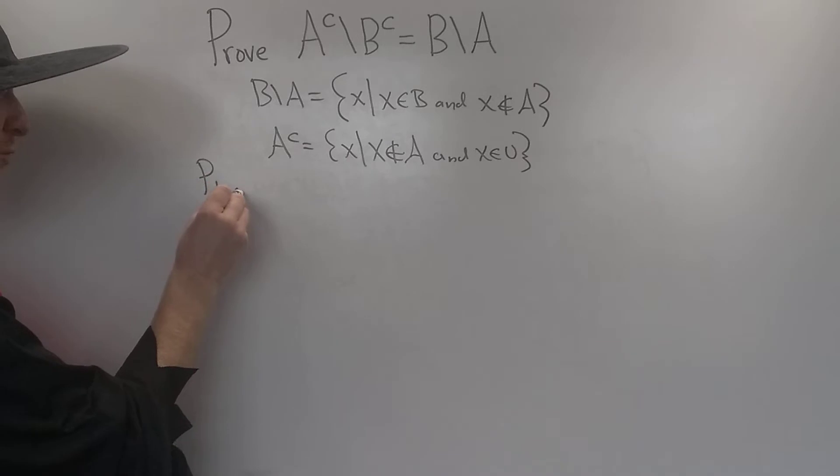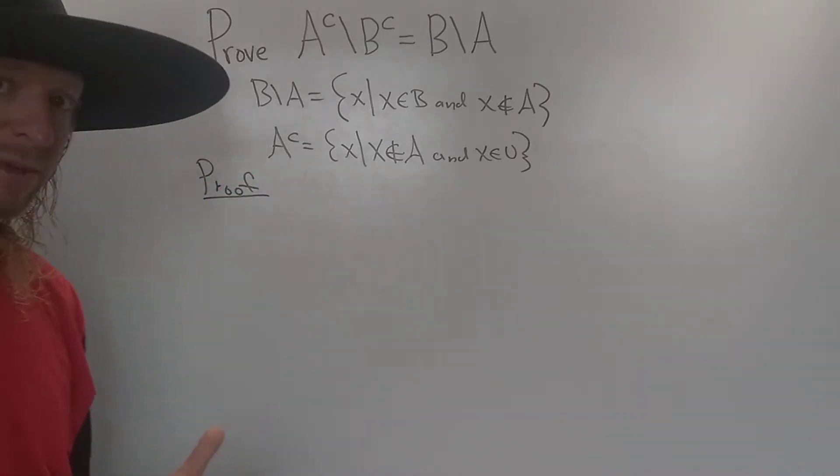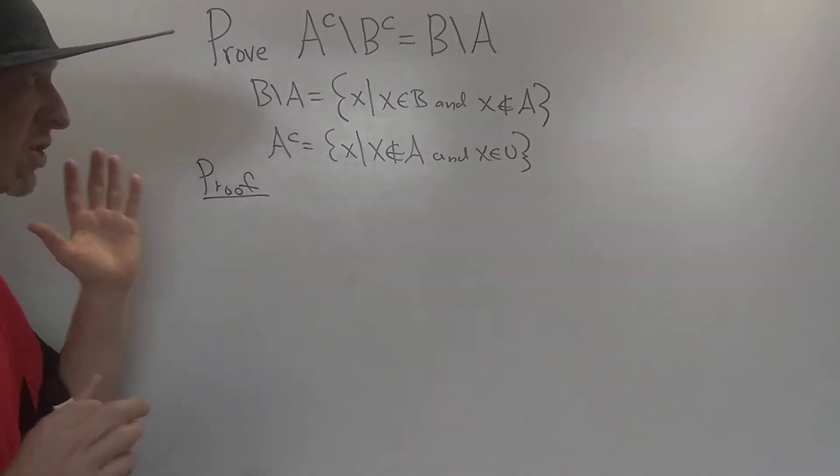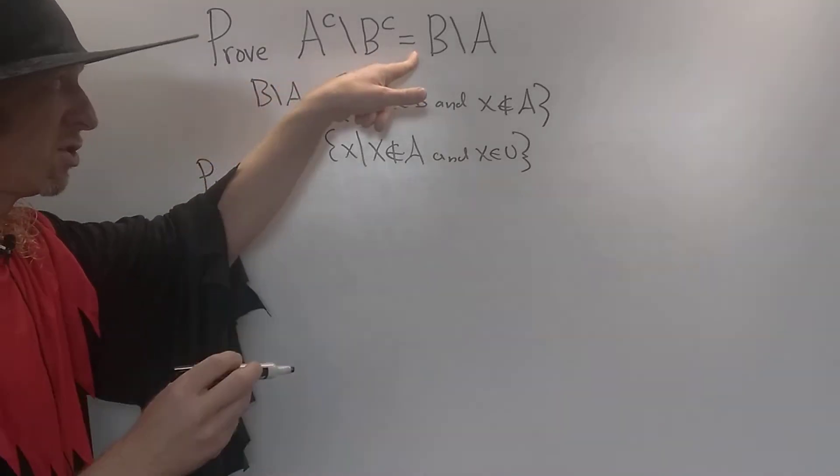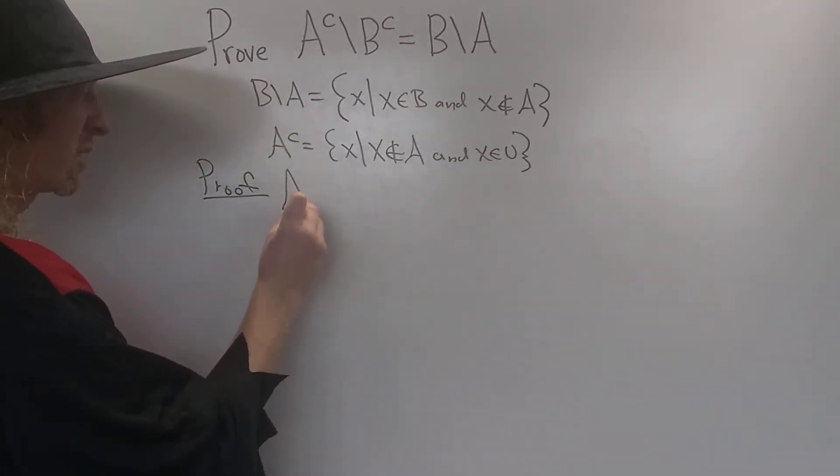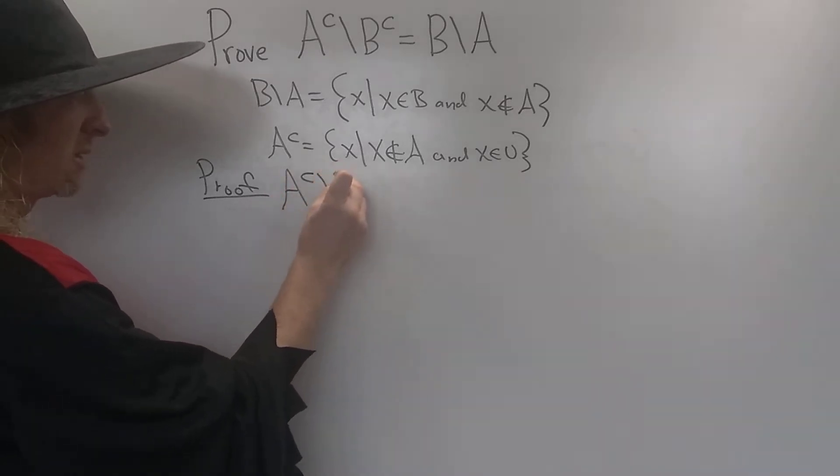All right, let's prove this. I haven't done this problem yet, I'll be honest. Let's just try to do it all at once. So let's just start by writing this down and just showing it's equal to this. Let's see if it works. So A complement set minus B complement. Let's go really slow here.